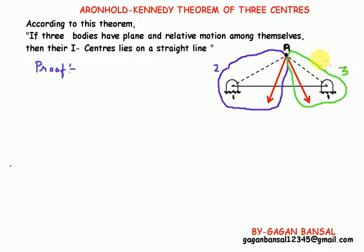Let's assume we have three links with plane and relative motion among themselves. Link one is fixed, link two shown by this blue curve, and this green is link three. Links one, two, and three are in relative motion among themselves. According to Arnold-Kennedy's theorem, these three must have their i-centers in a straight line.